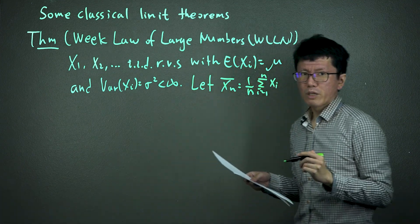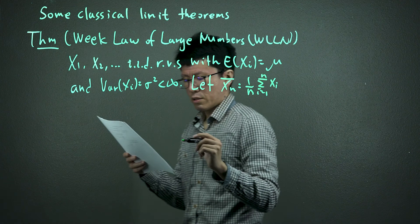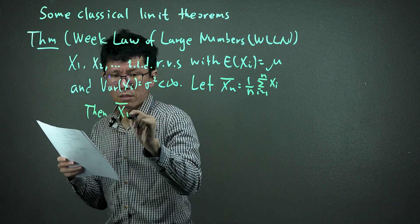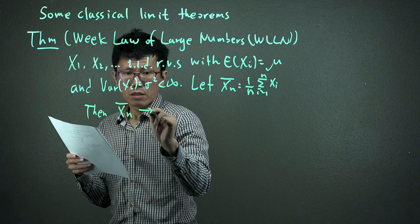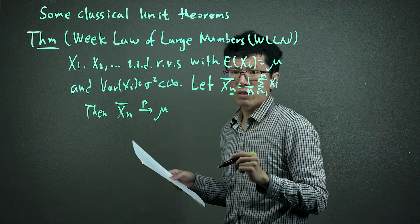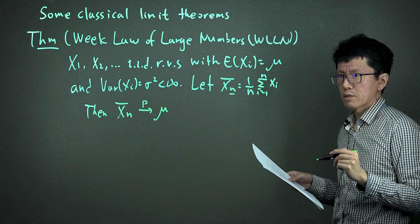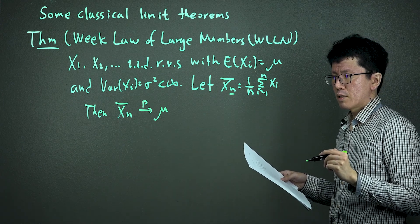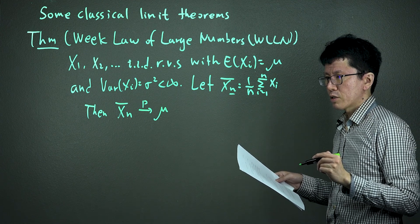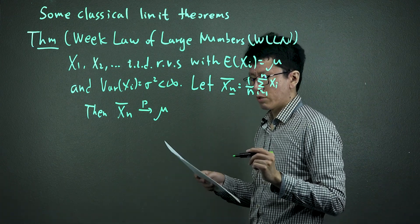Define the sample mean of the Xi. I use the notation X-bar with subscript n to indicate the dependence on sample size n. Then this X-bar_n, the sample mean, converges in probability to mu. That's the weak law of large numbers.